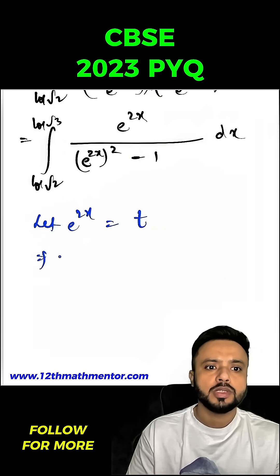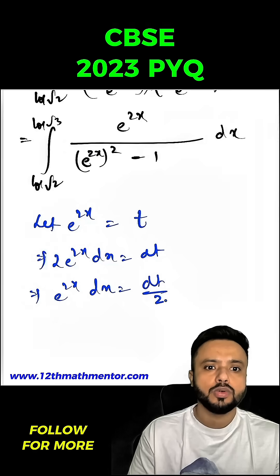Which means 2 e raised to the power 2x dx would be equal to dt, so e raised to the power 2x dx would be equal to dt upon 2.